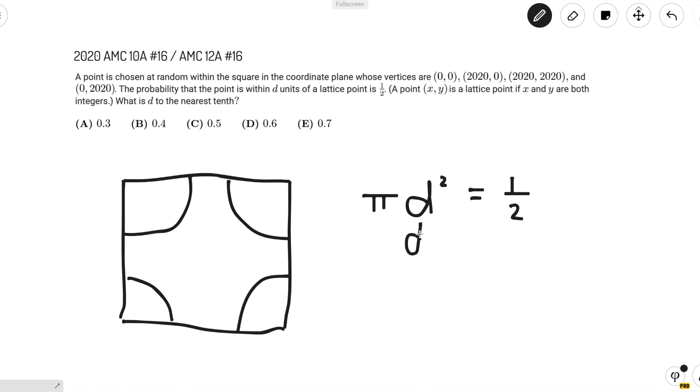That means d² = 1/(2π), or d = 1/√(2π). Now we can approximate π as 3.14, which means that we can approximate 2π as 6.28, which turns out is approximately 6.25.